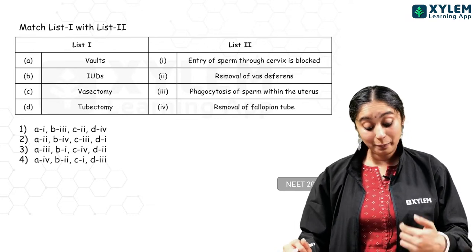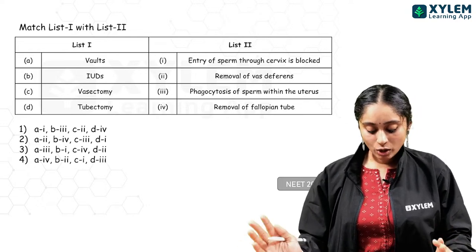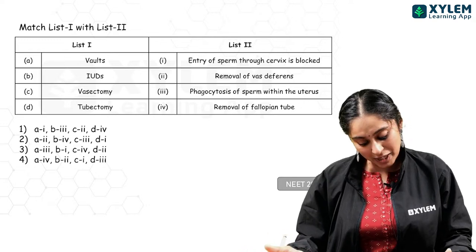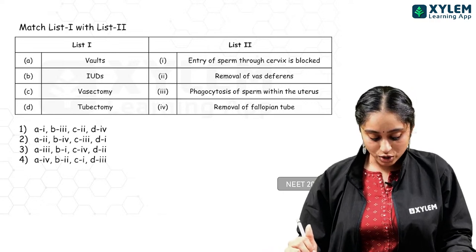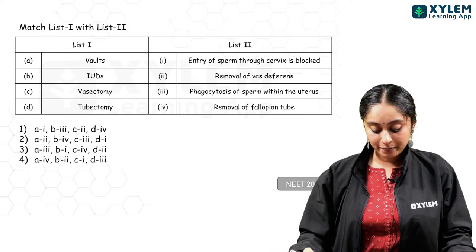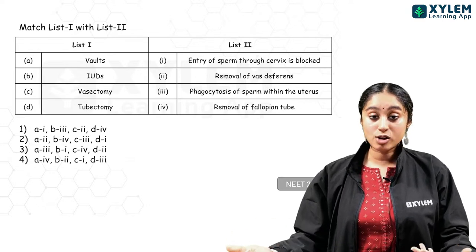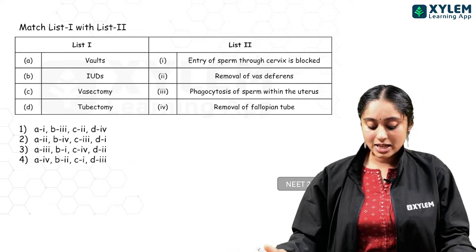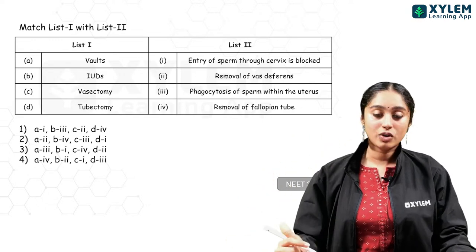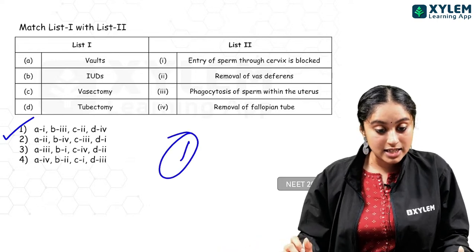Another NEET 2022 match the following: vaults, IUDs, vasectomy, tubectomy against: entry of sperm through cervix is blocked, removal of vas deferens, phagocytosis of sperms in the uterus, removal of fallopian tubes. Vaults block entry of sperms into the cervix (A→1). IUDs promote phagocytosis of sperms (B→3). Vasectomy involves removal of vas deferens (C→2). Tubectomy involves removal of fallopian tubes (D→4). Answer is option 1.